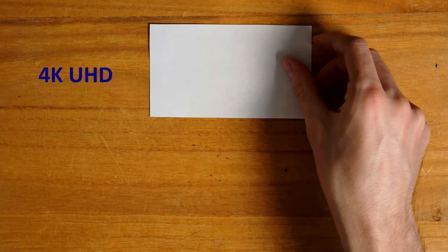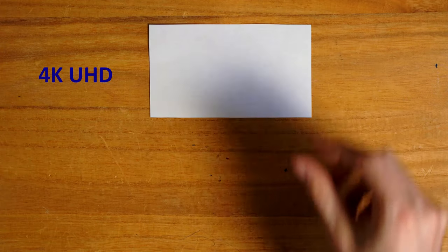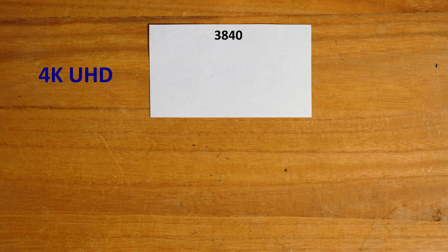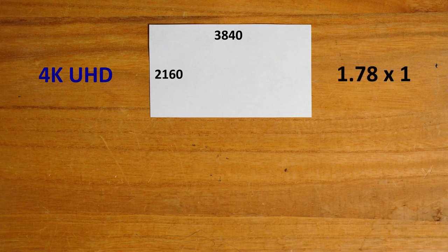Here is your 4K Ultra HD. It has a resolution of 3840 by 2160, giving it an aspect ratio of 1.78 by 1, also known as 16 by 9. This is the aspect ratio for most modern televisions.